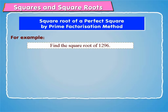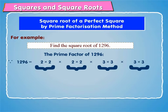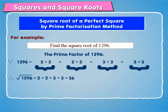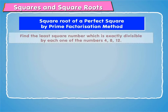Let us find the square root of 1296. For that, we find the prime factors of 1296. Because 1296 is equal to 2 × 2 × 2 × 2 × 3 × 3 × 3 × 3. Therefore, the square root of 1296 is equal to 2 × 2 × 3 × 3, which is equal to 36.